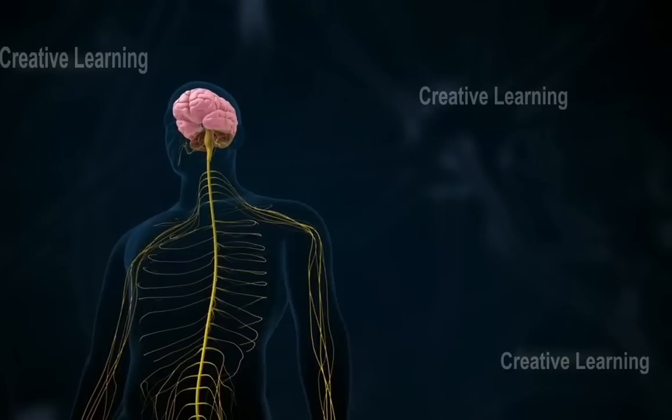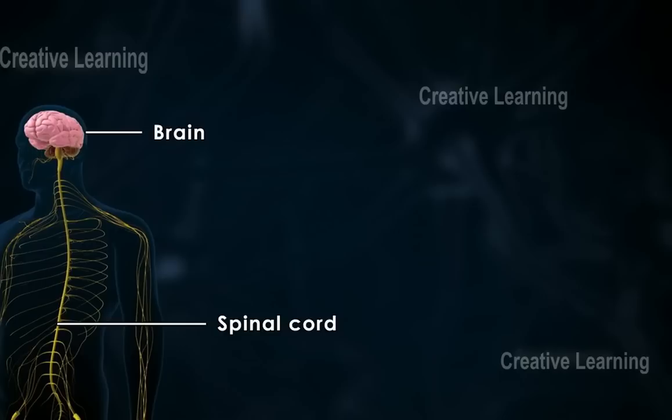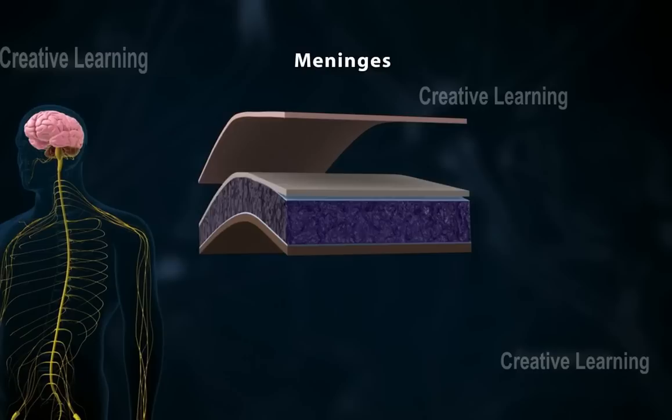The Central Nervous System is composed of the brain and spinal cord. Both are enclosed in protective layers called meninges.